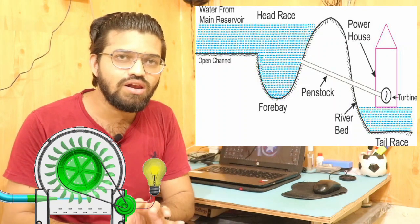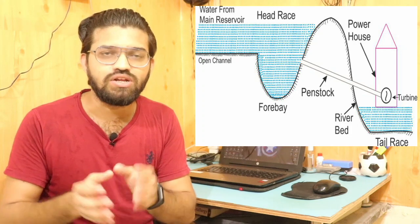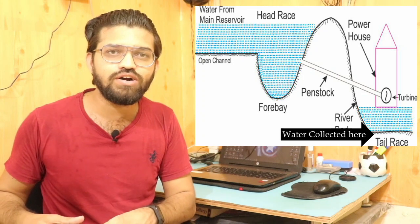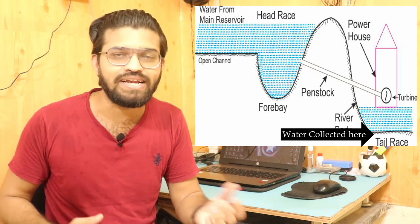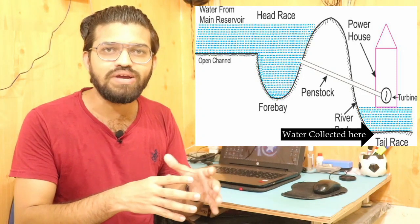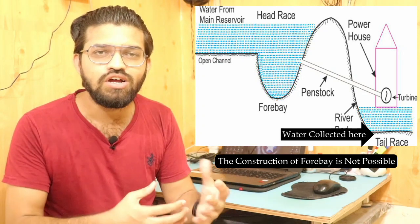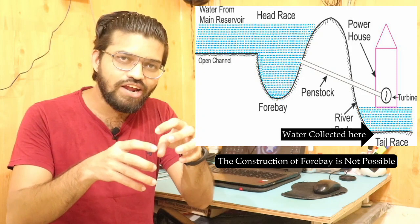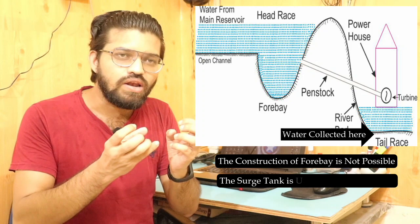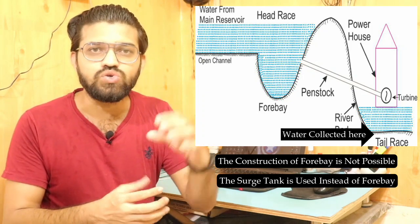This is the actual working and production of electricity via this hydroelectric power station. The water is then collected at the tail race and used for irrigation purposes later on. In certain reservoir dams, there is no provision to construct forebays — there are no provisions to make those tunnels. In that particular scenario, surge tanks are used.